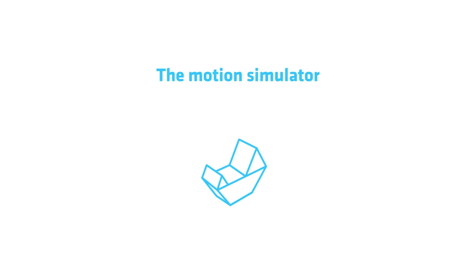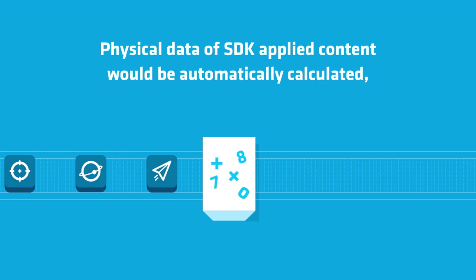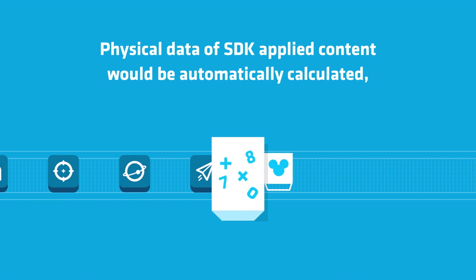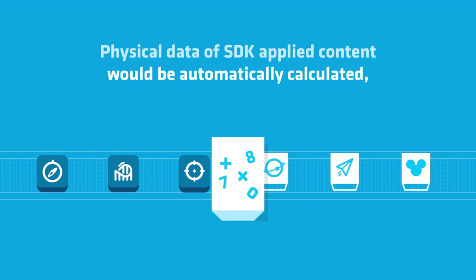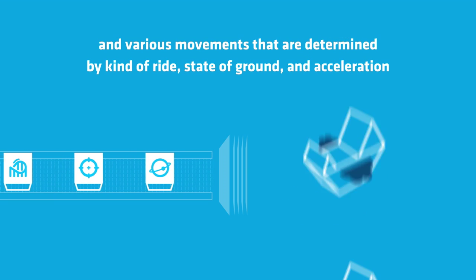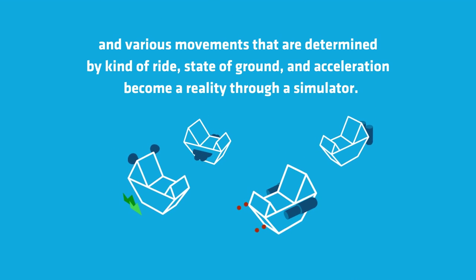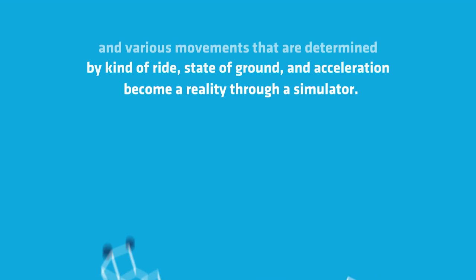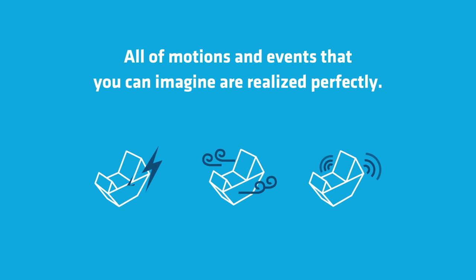The motion simulator for Nexperience is sophisticated. Physical data of SDK-applied content would be automatically calculated, and various movements determined by kind of ride, state of ground, and acceleration become a reality through the simulator. Effects like wind and sound give a more dramatic sense of reality. All motions and events that you can imagine are realized perfectly.